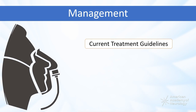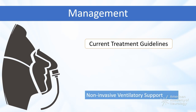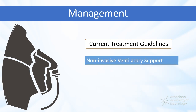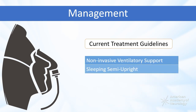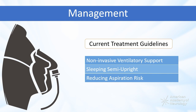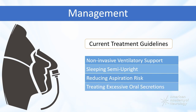In summary, current treatment guidelines for respiratory insufficiency in neuromuscular disorders include non-invasive ventilatory support, sleeping semi-upright, taking measures to reduce aspiration risk, and treating excessive oral secretions.